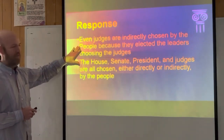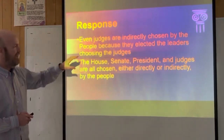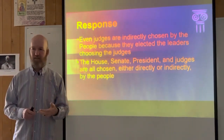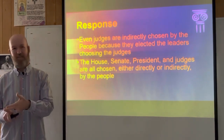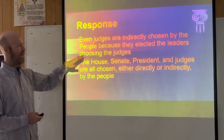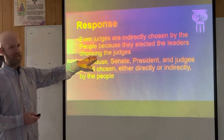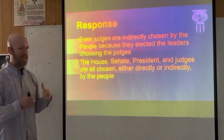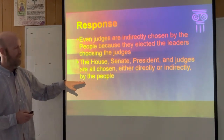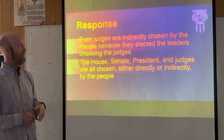Then they addressed judges. Even judges are indirectly chosen by the people, because federal judges are nominated by the president and then confirmed by the Senate — and the president and the Senate are representative of the people. So even judges represent the people. They acknowledged judges are not directly chosen by the people, but it is indirect. The House, the Senate, the president, and judges are all chosen either directly or indirectly by the people, so it is a Republican system.